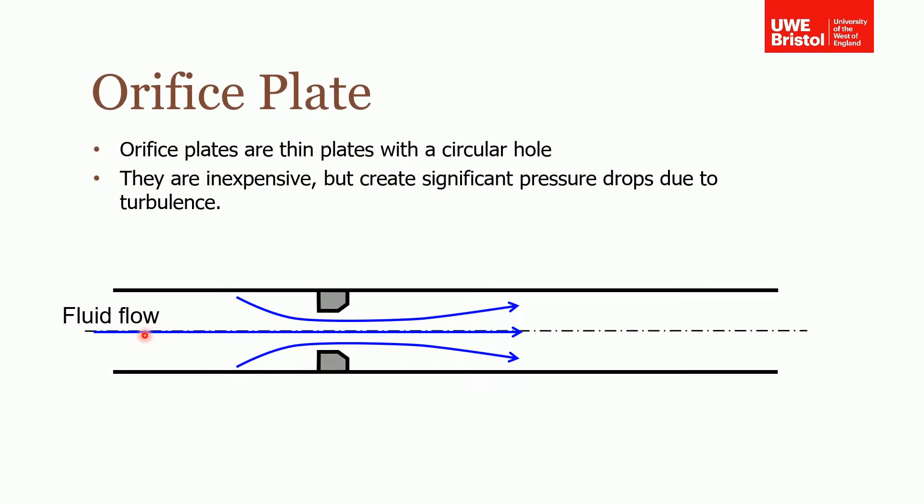Similarly to a Venturi, an orifice plate flow meter has a change in diameter and extension but unlike the Venturi it's quite abrupt. If you remember in the Venturi we had quite a nice contraction, throat and divergent section, but this is essentially just a plate with a hole drilled in it.